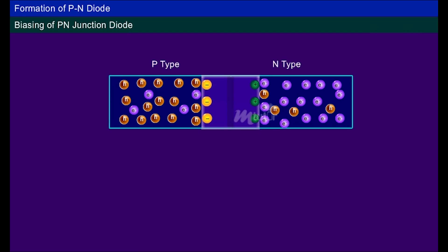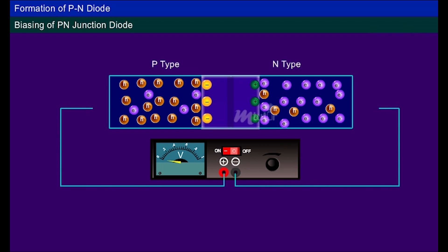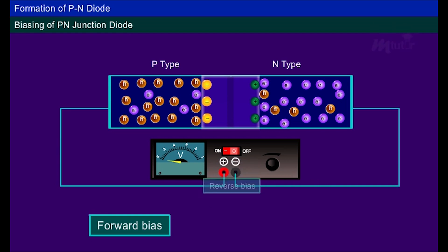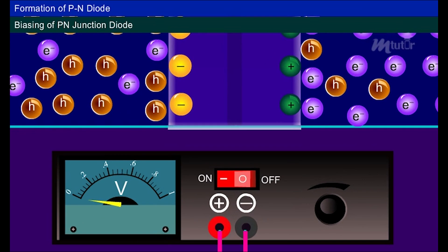Biasing of a P-N junction diode: applying an external DC voltage to the diode is called biasing. Depending upon the polarity of the DC voltage applied to the terminals, biasing is classified into forward biasing, reverse biasing, and zero biasing. If no voltage is applied to the P-N junction, it is called zero biasing.